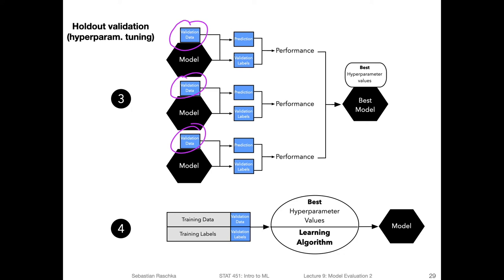How we do that is computing the performance, for example, the prediction accuracy for each model. And then in the model selection step, we select the best model—the model corresponding to the best hyperparameter settings.